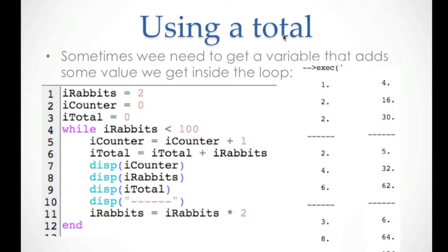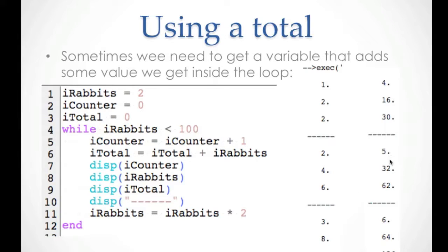Sometimes we need a total variable to accumulate values — for example, to add the values of irabbits. We initialize it to zero: itotal equals zero. Inside the loop, we write itotal equals itotal plus irabbits. The first day we have two rabbits, so total is two. The second day we have four rabbits, and total becomes six. The third day we have eight rabbits, and total becomes 14, since six plus eight is 14, and so on.